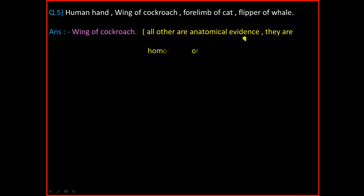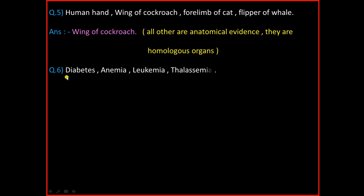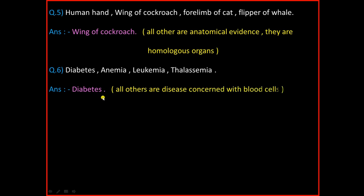Question Number 6: Diabetes, Anemia, Leukemia, Thalassemia. And the answer is Diabetes. The reason is all other diseases are concerned with the blood cells.